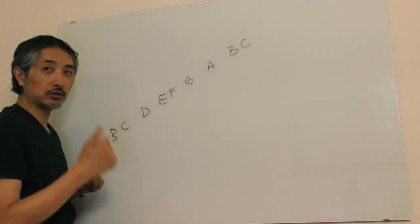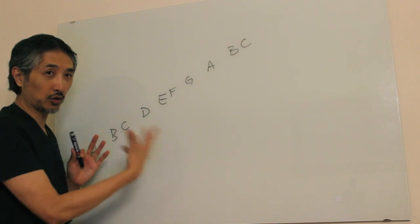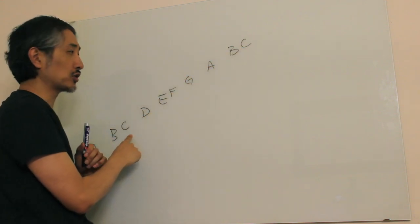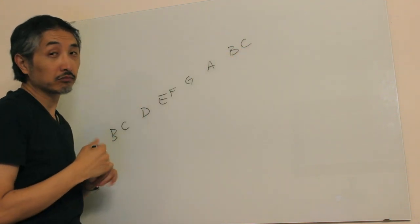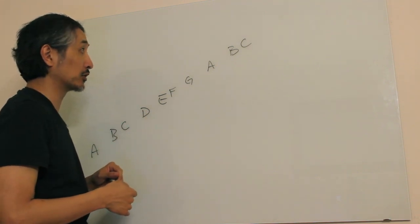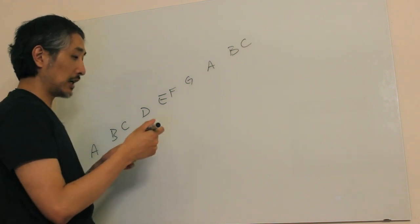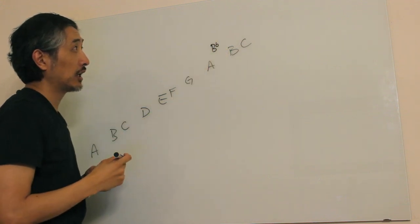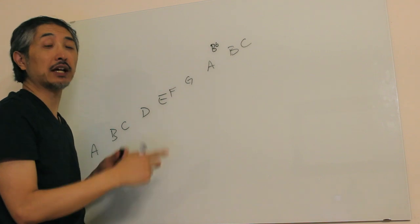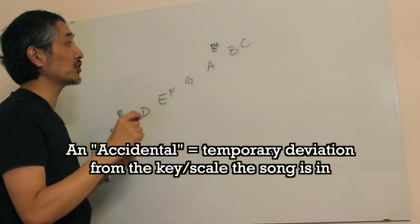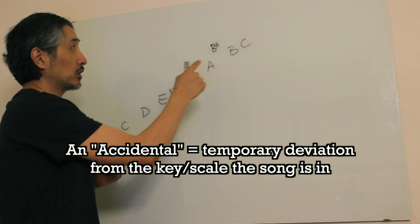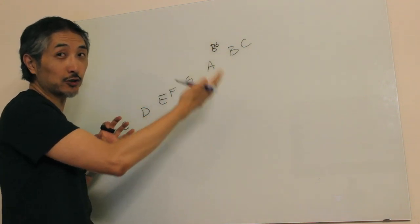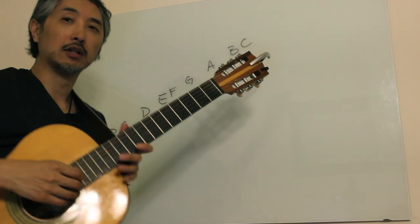There are times in a song where you don't want to stick only to the notes available in the key. If you're in the key of C — using C, D, E, F, G, A, B — you might want a B flat in a particular chord or scale run. That note is called an accidental. An accidental is a temporary use of a note from outside the scale, deviating away from the key notes.